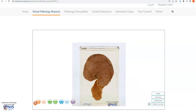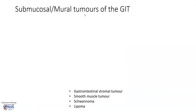Let's take a closer look at the differential diagnosis of mural or submucosal nodules in the gastrointestinal tract. When we think about submucosal or mural tumours of the gastrointestinal tract, we are considering mesenchymal tumours — in other words, tumours that do not arise from the epithelium or the mucosa. The prime differential diagnosis would include gastrointestinal stromal tumours or GISTs, smooth muscle tumours such as leiomyoma or leiomyosarcoma (the malignant counterpart), nerve sheath tumours such as schwannoma, and lipoma.